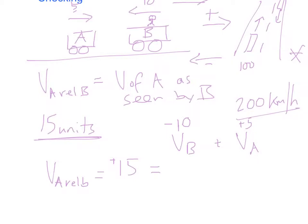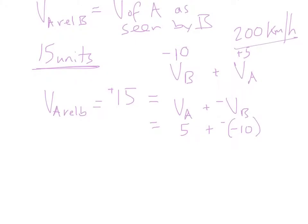Okay, so velocity of A relative to B, what we might look at doing is doing the velocity of A, which is still positive 5, plus negative the velocity of B. So in this situation, that's going to give us a double negative. We'll have plus the negative of negative 10, which means we end up with 15. Or 5 plus 10, because the double negative cancels out, giving us our 15 units that we're expecting from common sense.